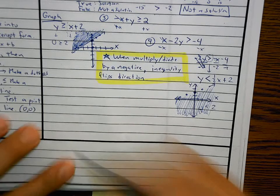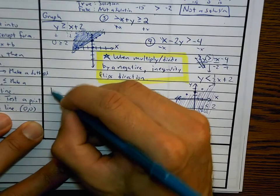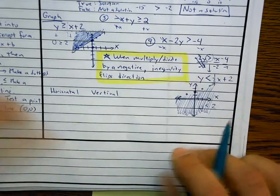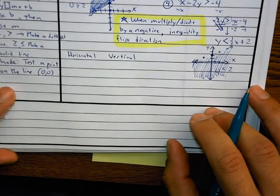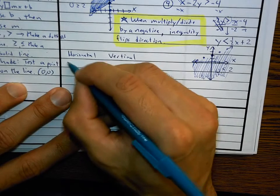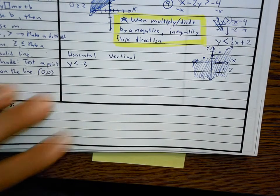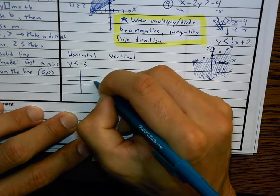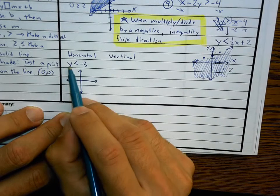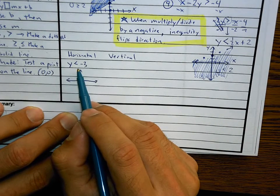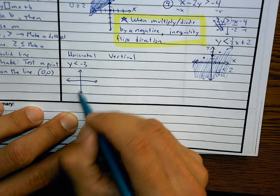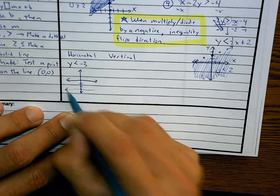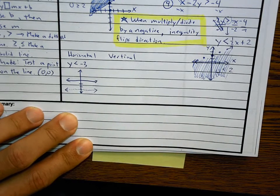Don't forget about horizontal and vertical graphs. If I have a horizontal line — something like y is less than negative 3 — anything that's y equals a number with no x at all is a horizontal line at negative 3. This is where all the y's are negative 3. And I'm going to make it dotted, because there's no line underneath the inequality.